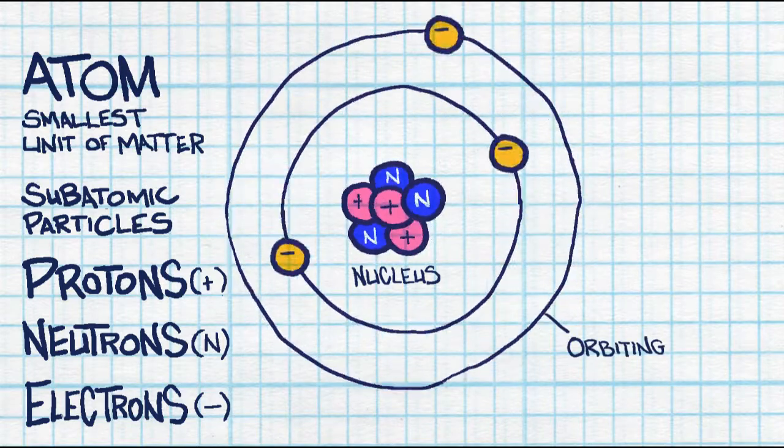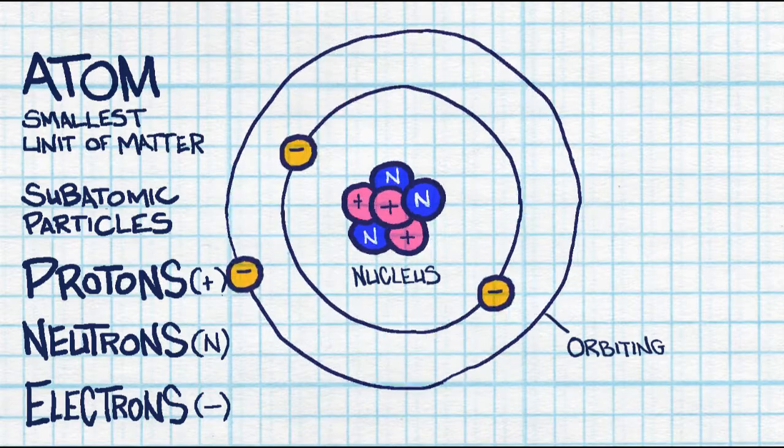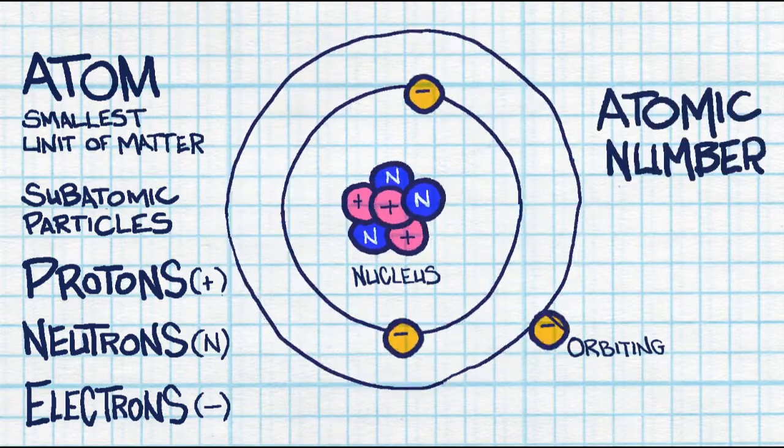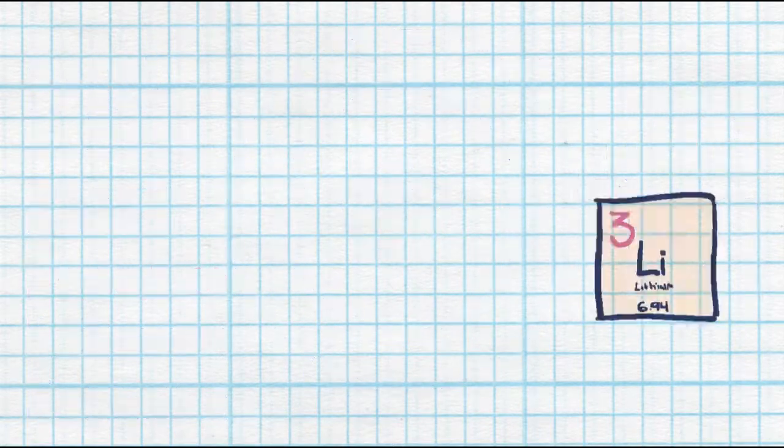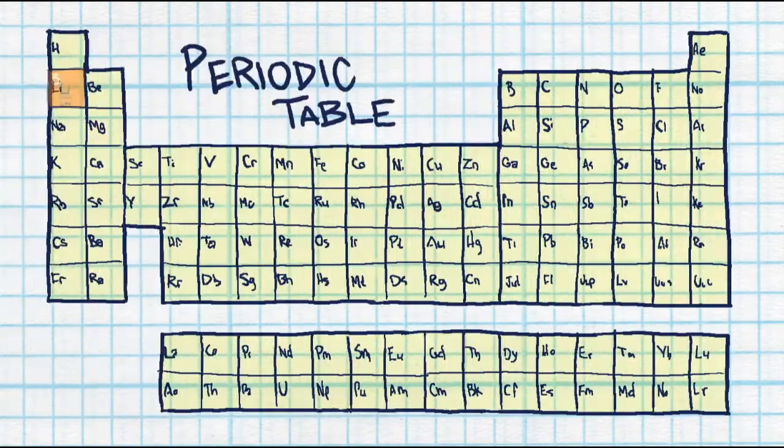If you have an atom and you're not sure which element it is, you're going to count up the atomic number, which is going to be the number of protons. That's what identifies an element. And you can find an element on a periodic table of elements.